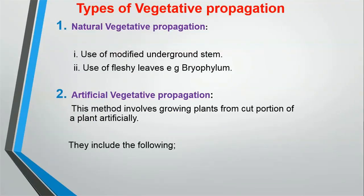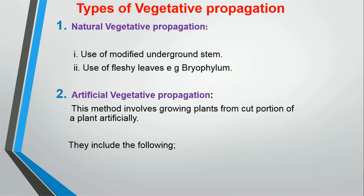Types of vegetative propagation: the first is natural vegetative propagation. This can involve the use of modified underground stems such as rhizomes — for example, ginger — bulbs such as onion, and corms such as cocoyam. These underground stems can be planted to get new offspring. The second way to carry out natural vegetative propagation is by use of fleshy leaves. An example is the Bryophyllum plant — you place its leaf in soil, cover it, and in a few weeks roots grow from the leaf, germinating into a full Bryophyllum plant.